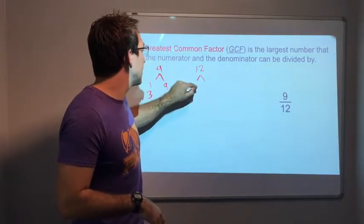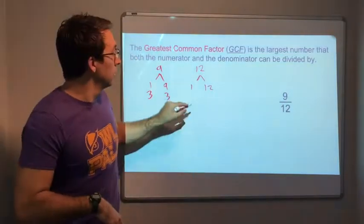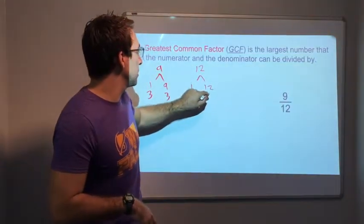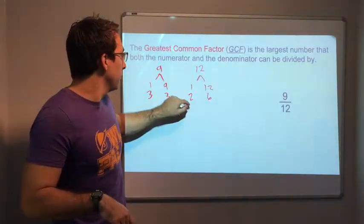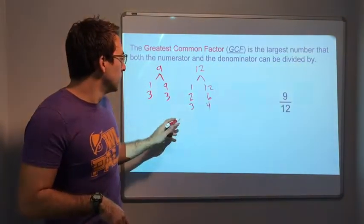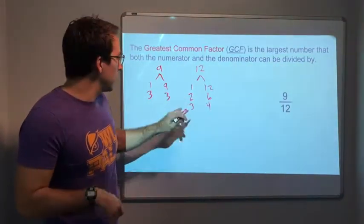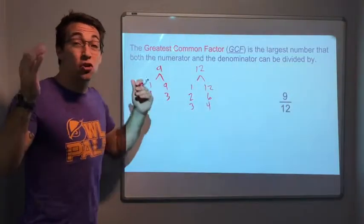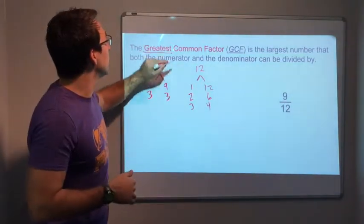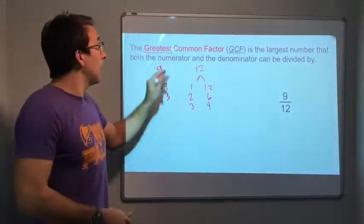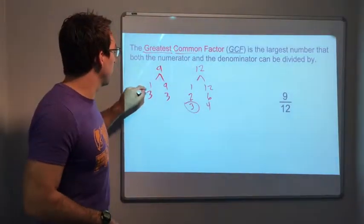12. So we have 1 times 12. 2 times 6 is 12. 3 times 4 is 12. 5 times, no. So what is the greatest common factor? Greatest, the largest number, and it has to be common. 3.